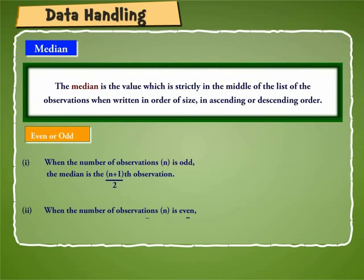When the number of observations n is even, the median is the average of n by 2th and n by 2 plus 1th observation.